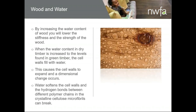By increasing the water content of wood, you lower the stiffness and strength of the wood. When the water content reaches green timber levels, the cell walls fill with water and can expand dimensionally — it's going to get fat again. Water softens the cell walls and the hydrogen bonds between the polymer chains in the cellulose microfibers can break. It can expand so much and soften the wood that you can start getting cracks in it. So you really want to be careful about controlling the moisture, understanding where it's coming from.